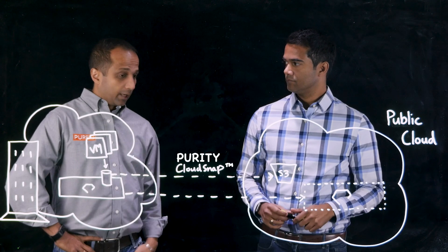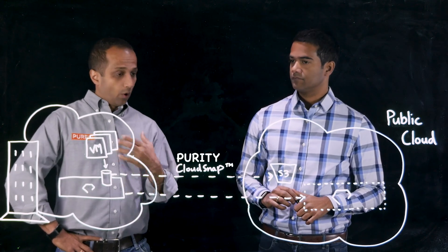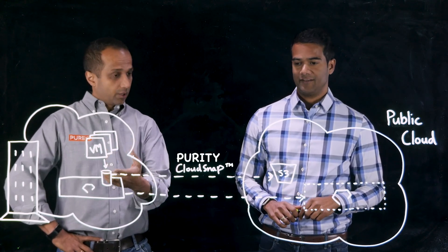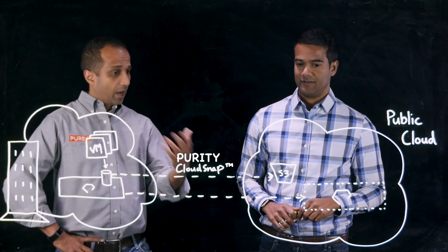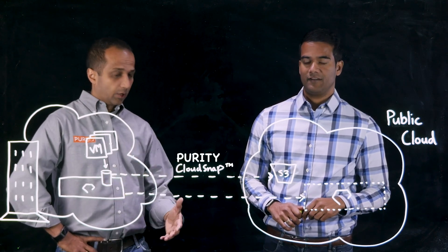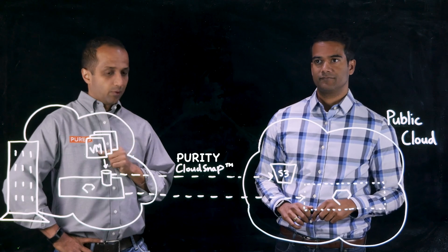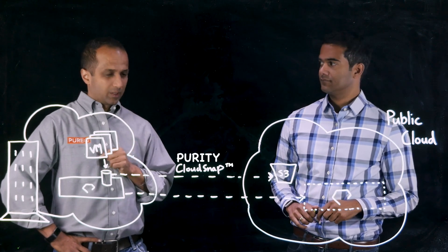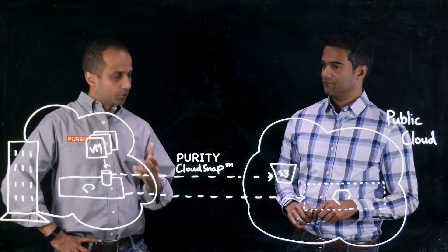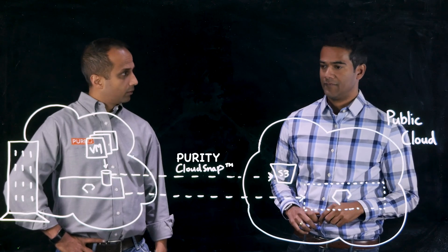Thanks, Naveen. That was great. So Cloud Block Store gives all the awesome capabilities that our customers have come to expect on the flash array on-prem — now you have all of those capabilities in the cloud. I'm thinking of a few use cases that this enables for our customers, but can you walk me through all the different use cases our customers can use this capability for?